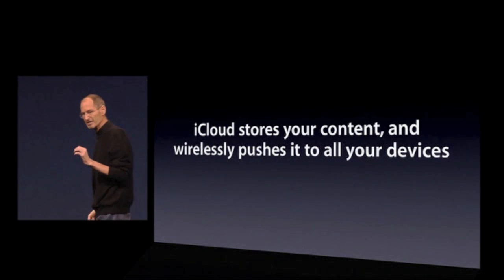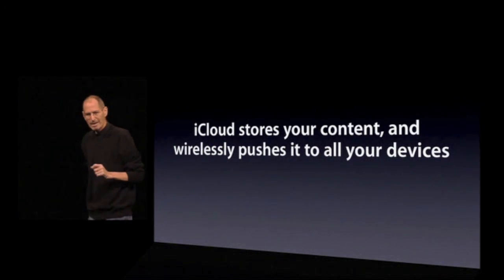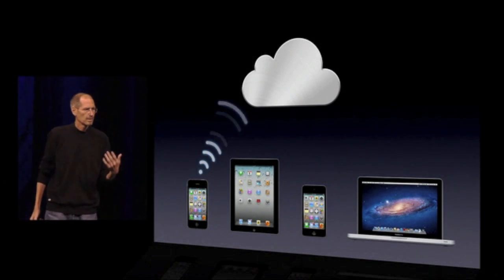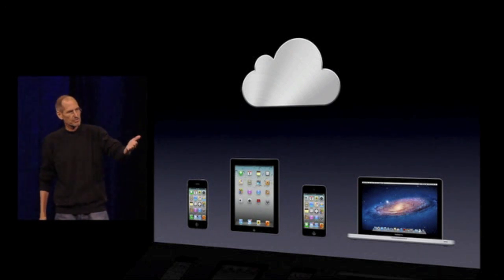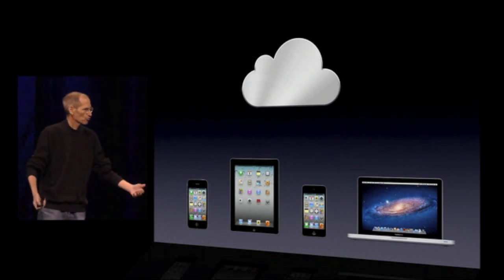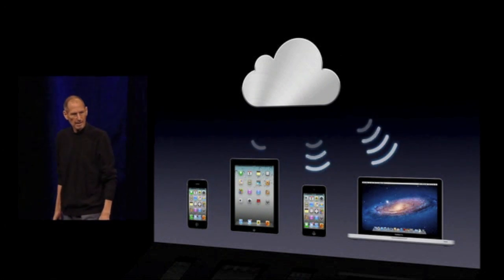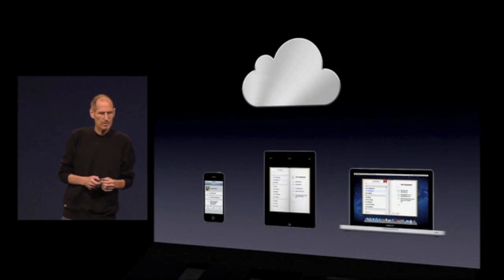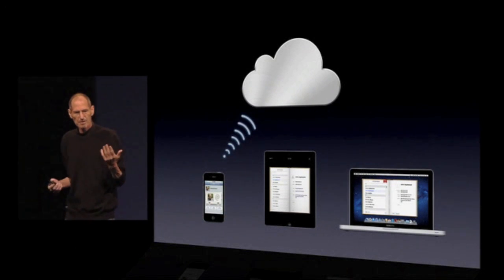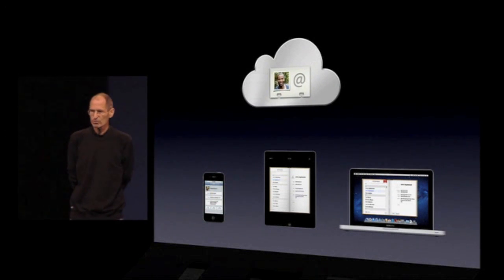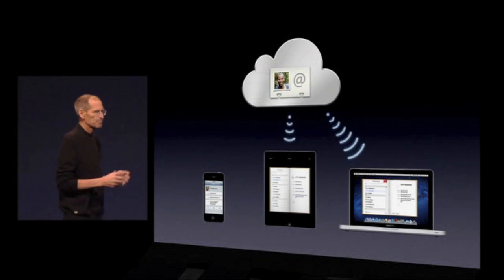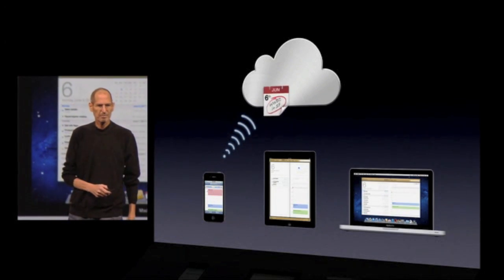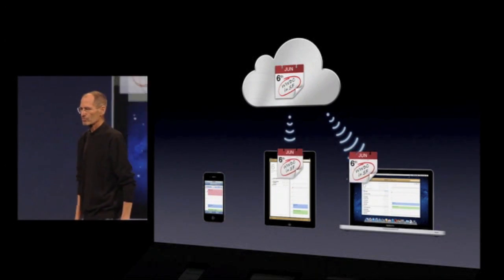iCloud stores your content in the cloud and wirelessly pushes it to all your devices. If I get something on my iPhone, it is sent up to the cloud immediately. Take some pictures — those pictures are in the cloud and pushed down to all my devices completely automatically. In Contacts, when I make a new contact on my iPhone, it's automatically brought up to the cloud where it's stored, then pushed down to my other devices so they're all in sync. I make a new calendar event on my iPhone — it's stored in the cloud and pushed to my other devices.